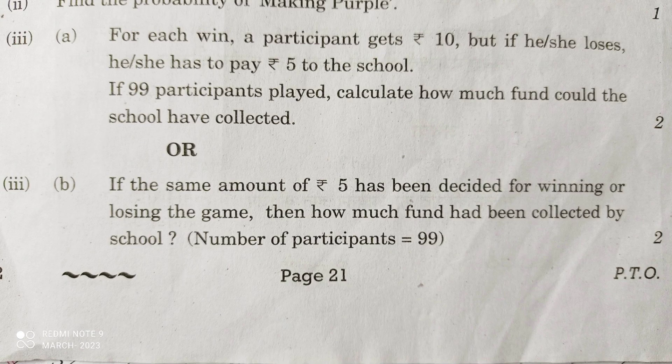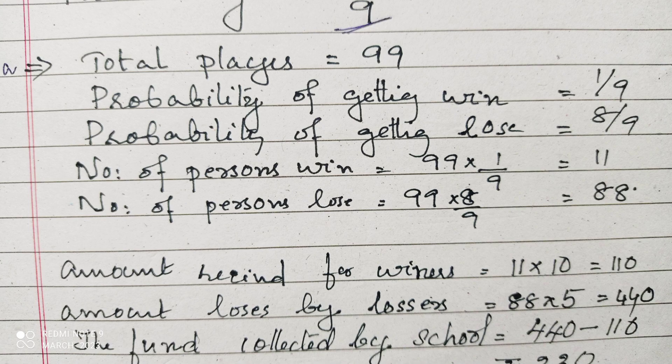The third question has 2 parts. For each win, the participant gets rupees 10, but he or she has to pay rupees 5 to the school. If 99 participants play, calculate how much the school should have collected. Total number of players is 99. The probability of getting a win is 1/9. Therefore, the probability of getting a loss is 8/9.